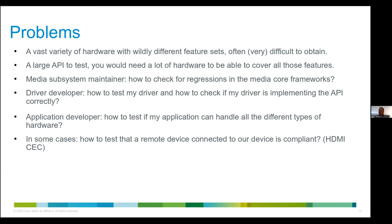If you want to test APIs, we don't have the hardware to cover it all. As a subsystem maintainer, if I make changes to the media core frameworks I'd like to know there are no regressions — but if I can't get all the hardware, how would I do that? And even if I had all the hardware, it would take ages to run all the tests. As a driver developer making a new driver, how do I test that I've implemented all the required ioctls correctly and covered all the corner cases?